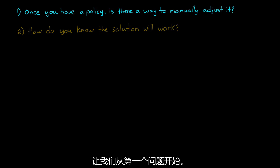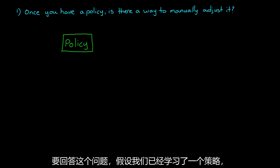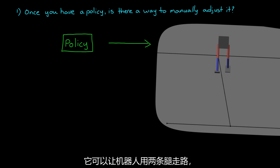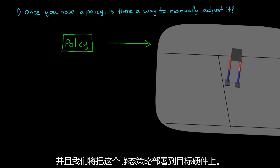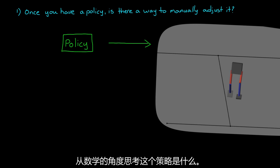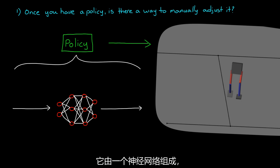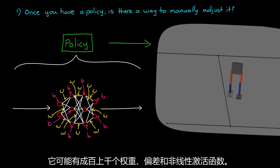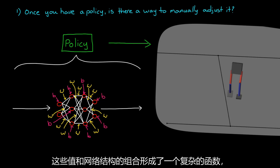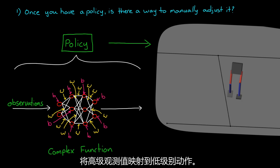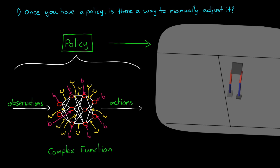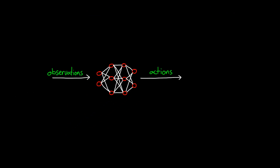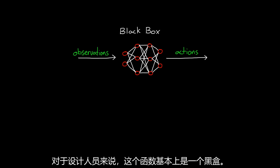Let's start with the first question. Let's assume that we've learned a policy that can get a robot to walk on two legs and we're about to deploy this static policy onto the target hardware. Think about what this policy is mathematically — it's made up of a neural network with possibly hundreds of thousands of weights and biases and non-linear activation functions. The combination of these values and the structure of the network creates a complex function that maps high-level observations to low-level actions. This function is essentially a black box to the designer.